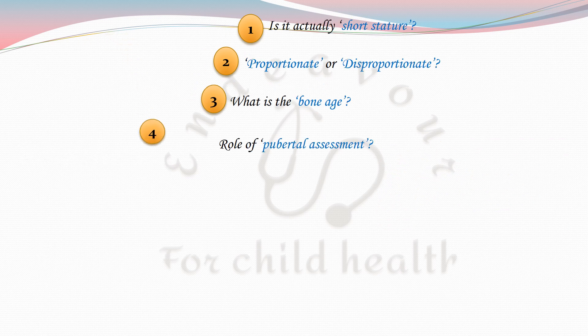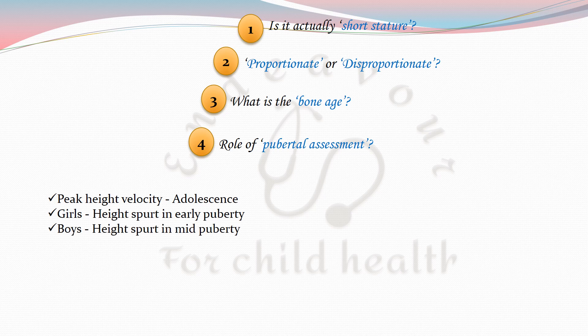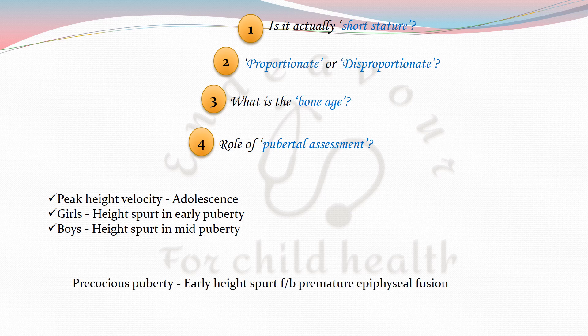The fourth important point is pubertal assessment. Peak height velocity is seen in the adolescent age group. In girls, the height spurt is achieved in early puberty, whereas in boys it is achieved usually in mid-puberty. In precocious puberty, there is an early height spurt followed by premature epiphyseal fusion, which leads to short stature.